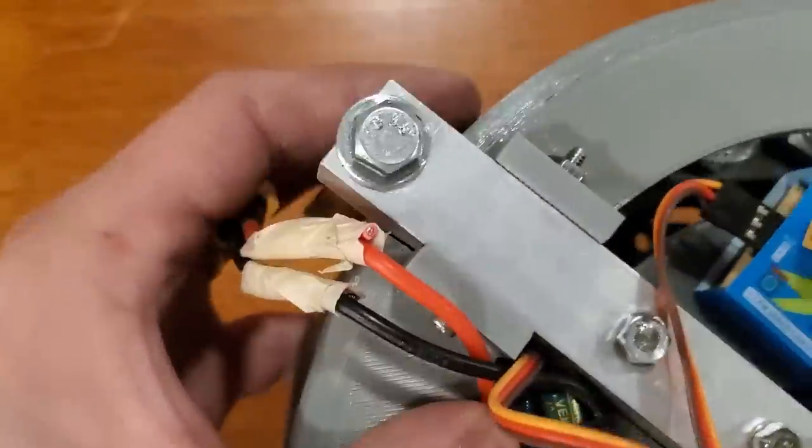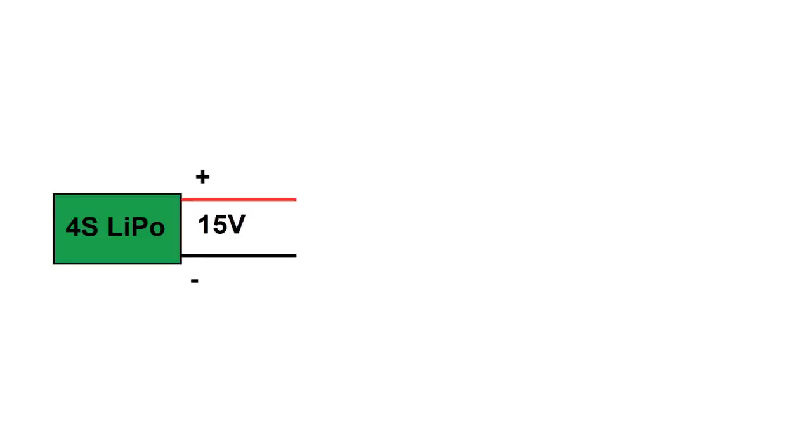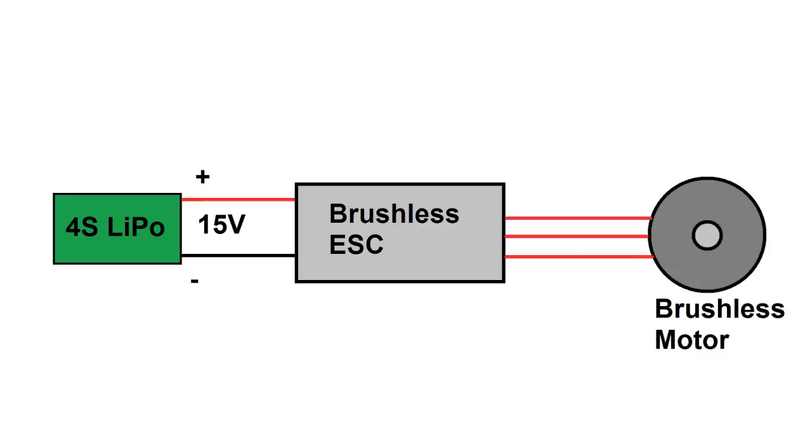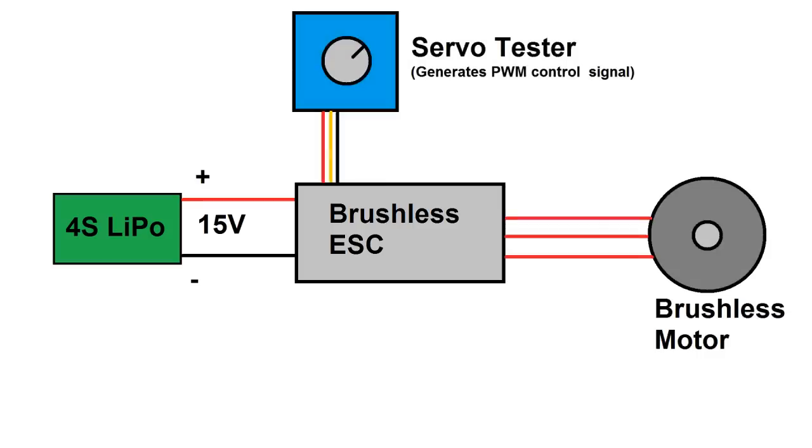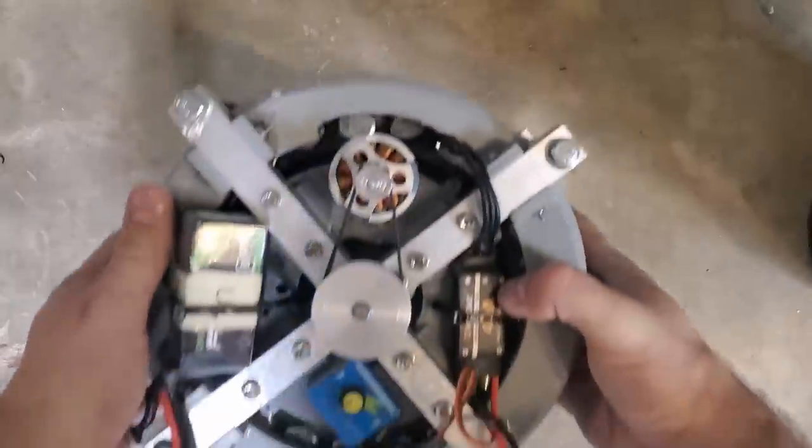The wiring is pretty straightforward. It's just a 4 cell lithium battery hooked up to a brushless speed controller which drives the motor. The brushless speed controller has its speed adjusted by a servo tester. This is important because the speed has to be very gradually ramped up since the wheel has so much inertia. It's not just an on off switch. Alright, let's give this thing a try.